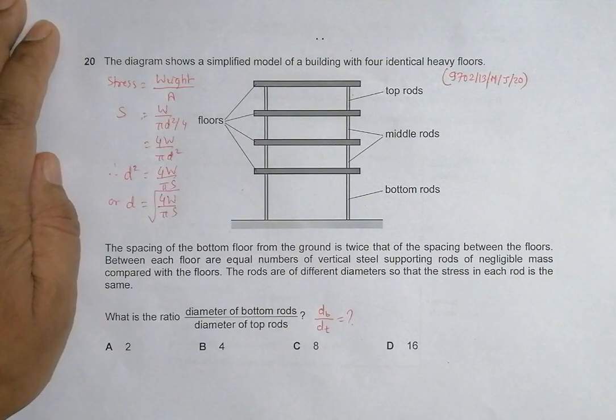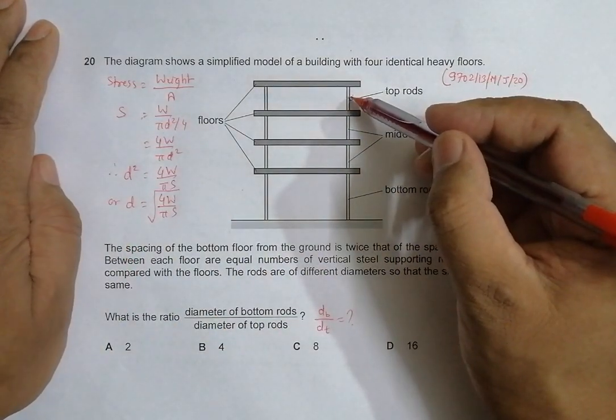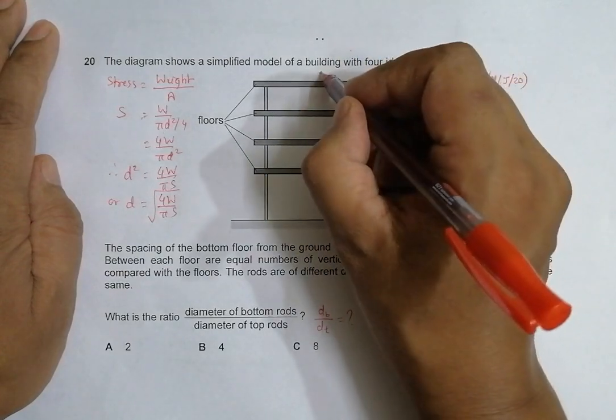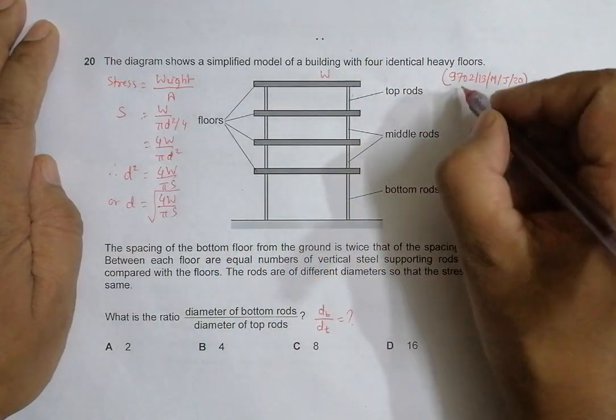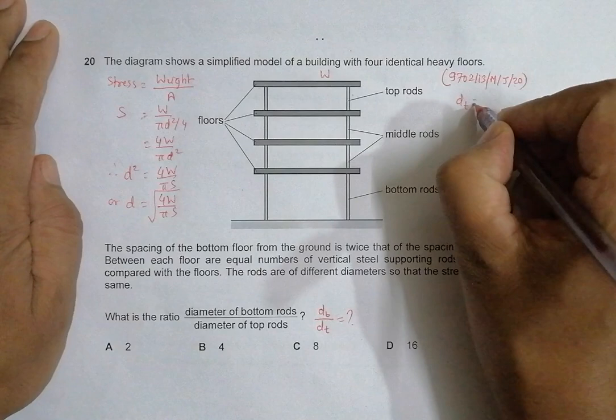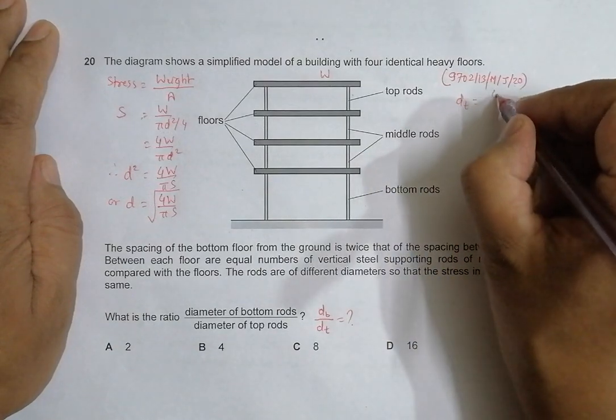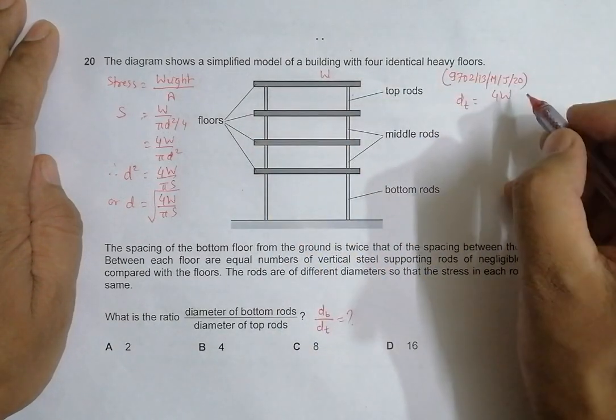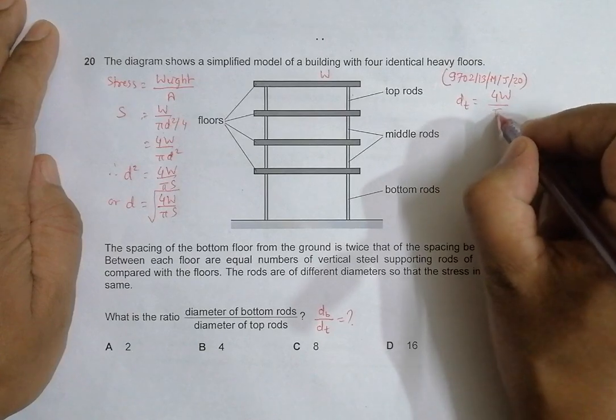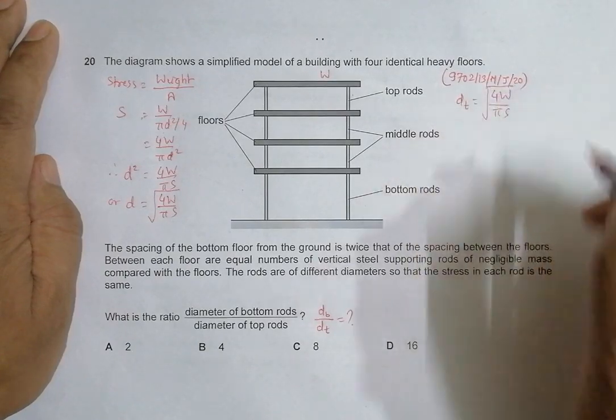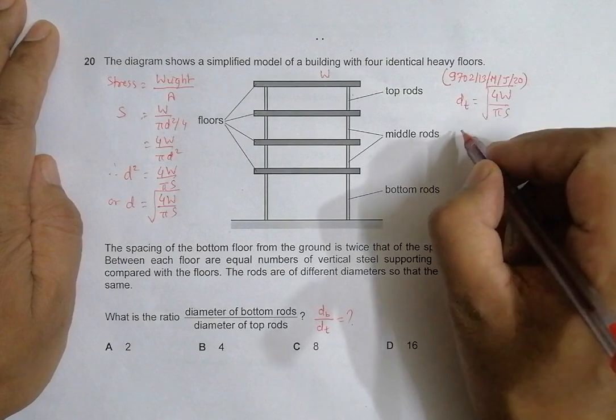Let's say this is the diameter of the top rod, where the weight of one floor is W. So the diameter of the top rod required is the square root of 4W divided by π S, where S is the stress.